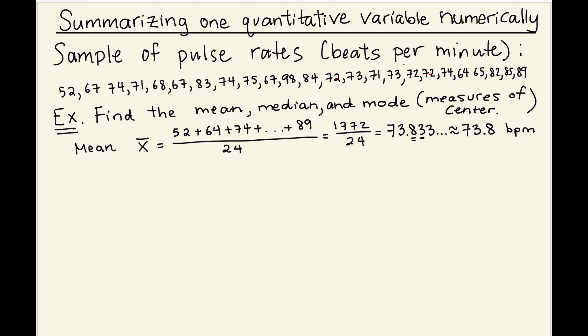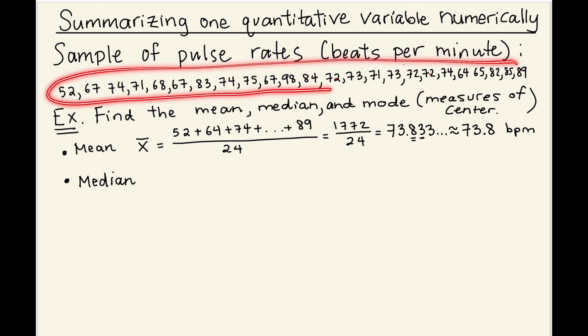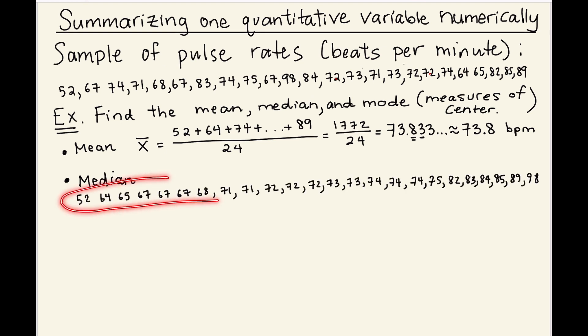The next measure of center we're going to talk about is the median. The median is basically like the middle value in the ordered list of numbers. It is the value that is greater than half the numbers and smaller than half the numbers. So in order to calculate the median, I'm actually going to have to rewrite this list of numbers, and I'm going to have to rewrite it from smallest to largest. So that's a little bit tedious. So you see the list of numbers, but they've been ordered from the smallest number working up to the largest number.